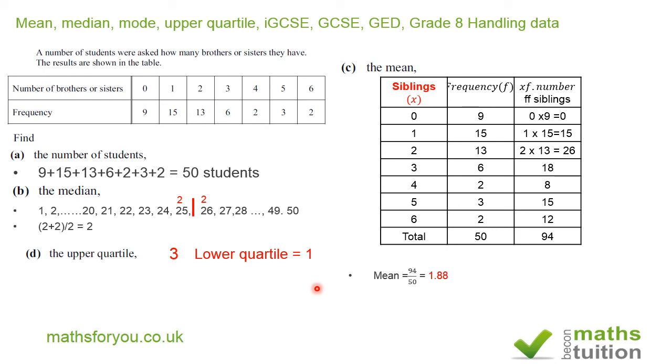Now I want to find the range. The range is the highest value minus the smallest value. And the highest value in the siblings category is 6, and the lowest value is 0. So 6 minus 0 gives us 6. So the range is 6.